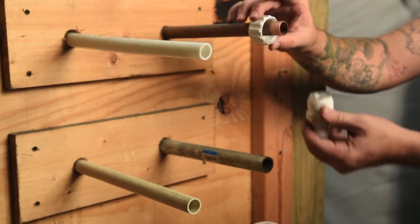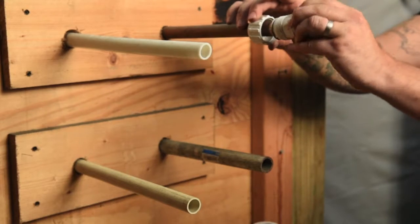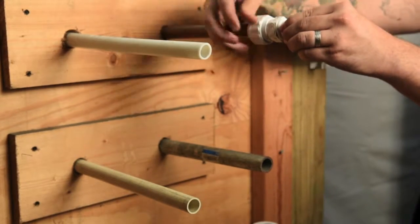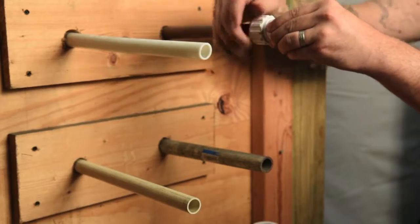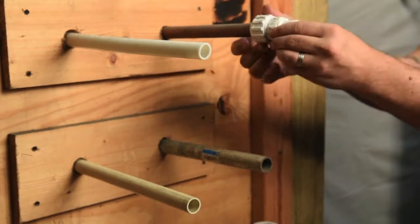First the compression nut is placed over the copper, followed by the other three on the PVC adapter. This is then tightened down onto the adapter which compresses onto the copper.